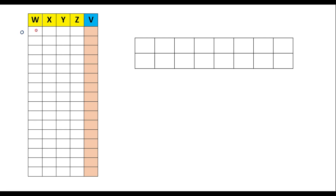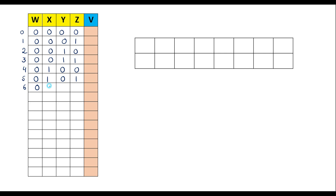For 0 we write in binary as 0,0,0,0. 1 is represented as 0,0,0,1. 2 is 0,0,1,0. 3 is 0,0,1,1. 4 is 0,1,0,0. 5 is 0,1,0,1. 6 is 0,1,1,0. 7 is 0,1,1,1. 8 is 1,0,0,0.